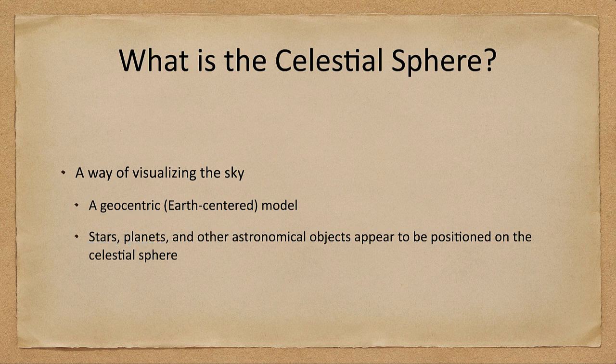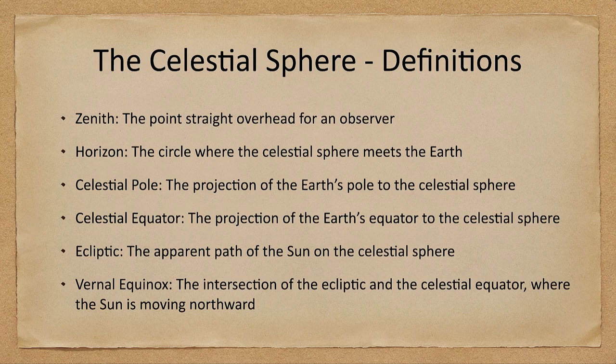In order to understand it, we need to look at a few definitions, and then we'll look at them in a little more detail on the coming slides. First of all, we have the zenith. The zenith is your point directly overhead — if you go outside and look straight up, that is your zenith.